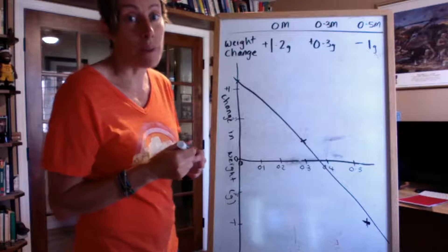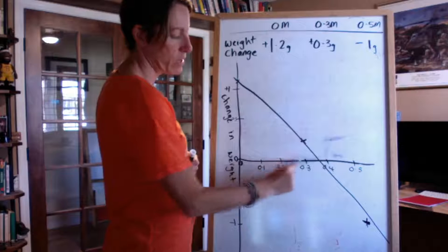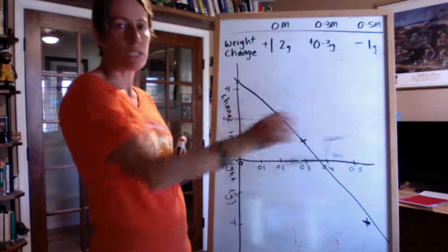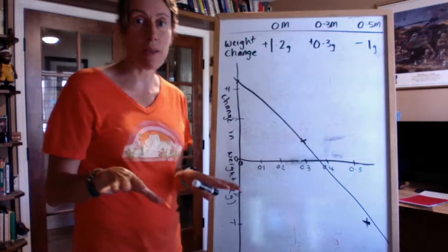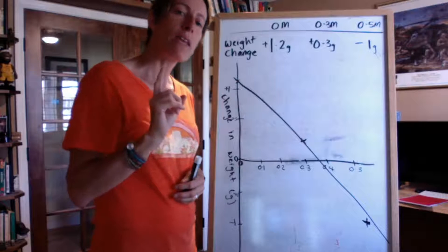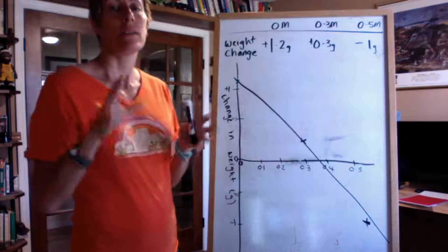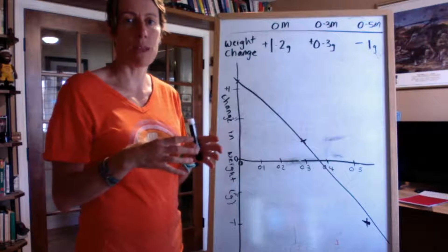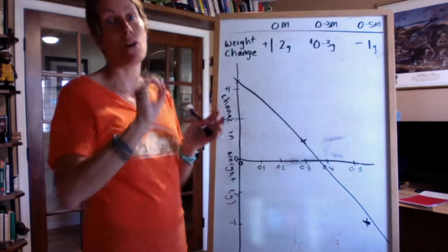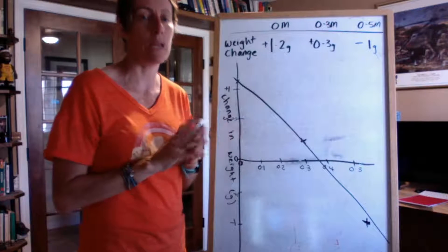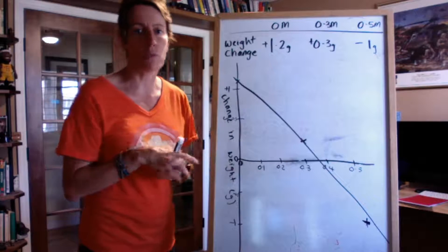We could have done this experiment differently. We could have set up like 100 different dishes. Instead of just doing three that we did, we could have set up tons of different dishes, all at slightly different concentrations. And we could have left them all for the same amount of time, weighed them all. And if we found the exact dish where there was no change in weight, then we can say the solution on the outside that the potato was bathing in is the same as the concentration inside. But that would have meant slicing up the whole potato, setting up tons of dishes, and a big old experiment.